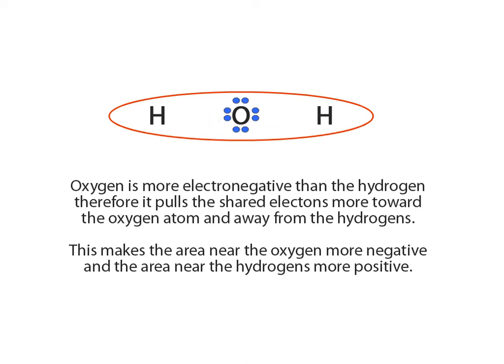So, by pulling negative charge closer to itself, the oxygen atom becomes slightly negatively charged, and the hydrogen atom becomes slightly positively charged. This molecule is then classified as a polar, having opposite charges at opposite ends, covalent molecule.